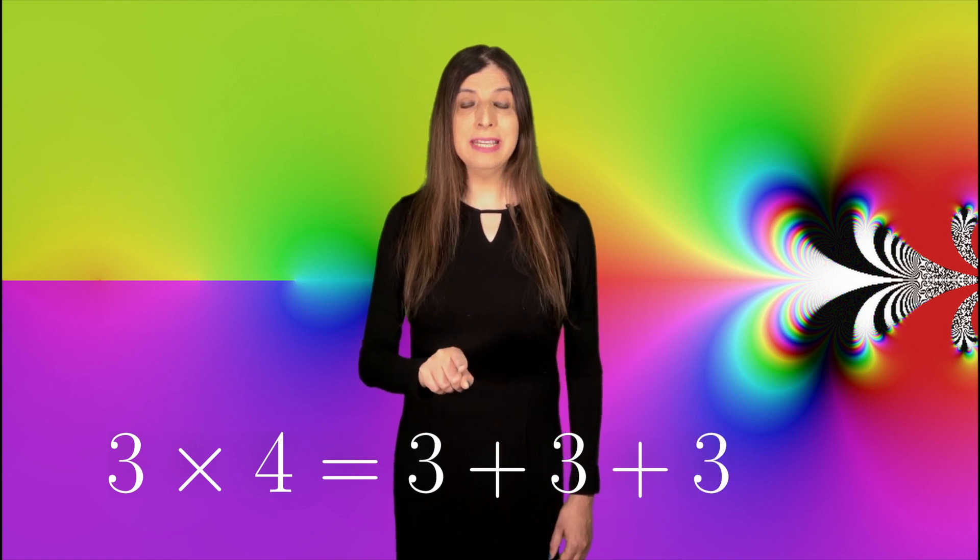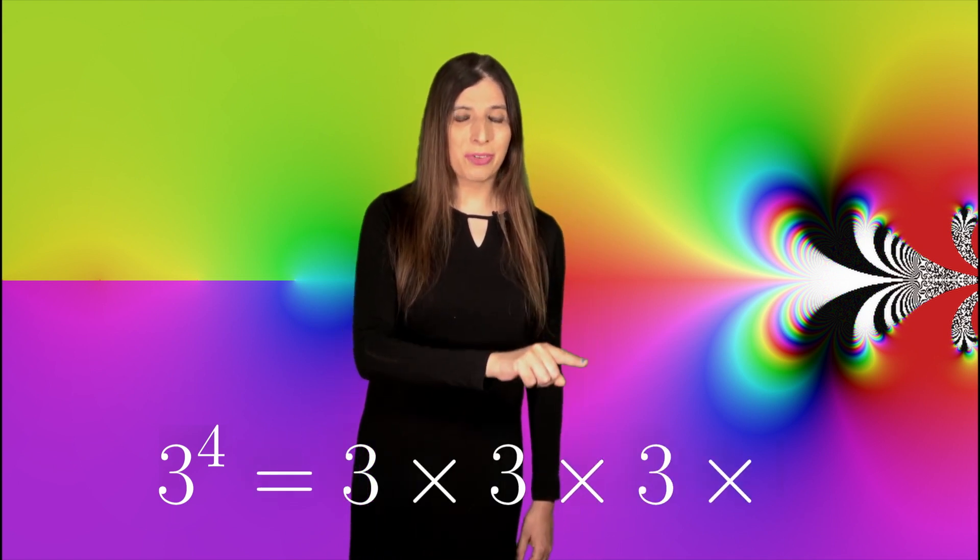Now everybody knows that 3 times 4 is 3 plus 3 plus 3 plus 3. Similarly, 3 raised to the 4th power is 3 times 3 times 3 times 3. But what happens if you want to raise 3 to the 3rd power to the 3rd power to the 3rd power?